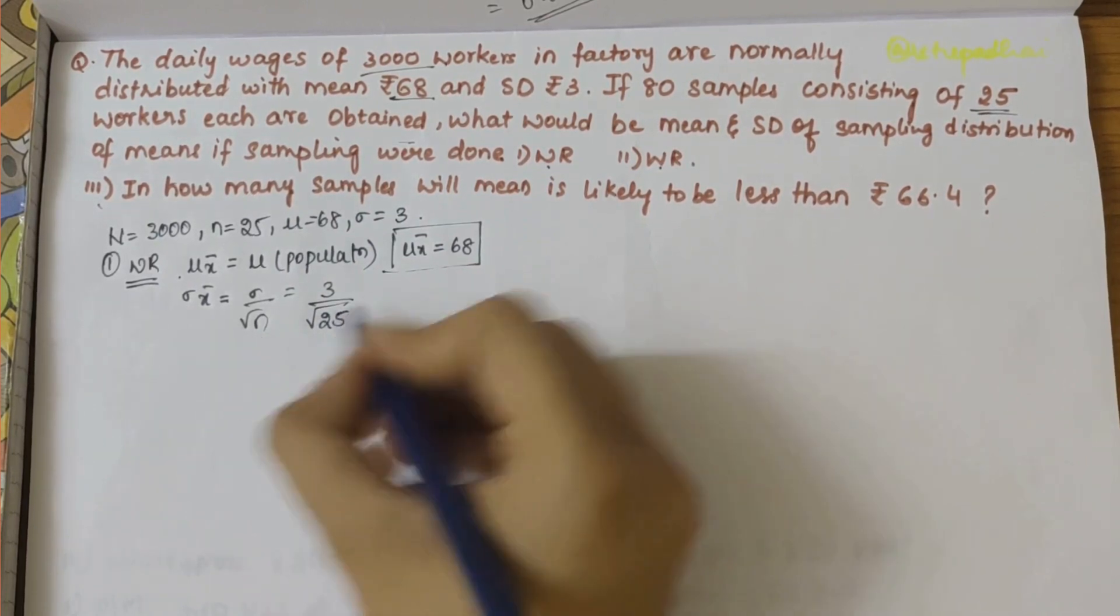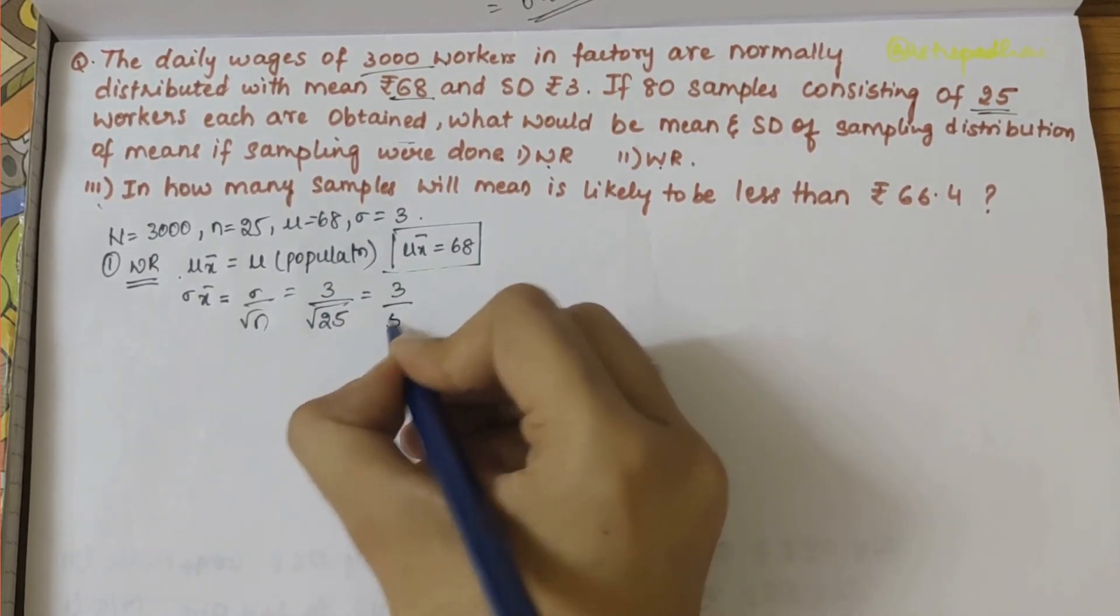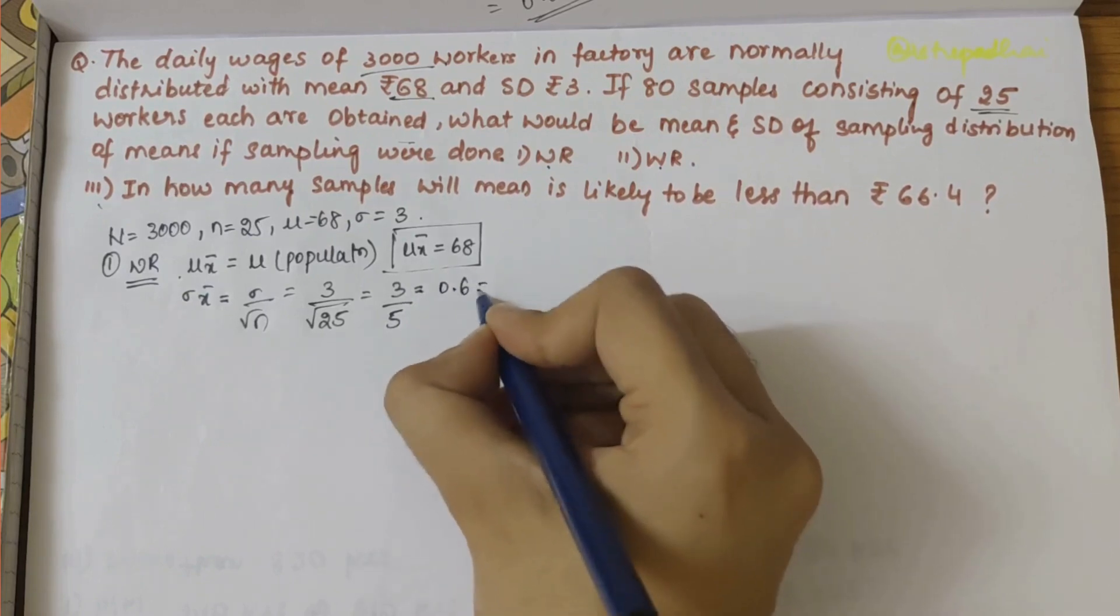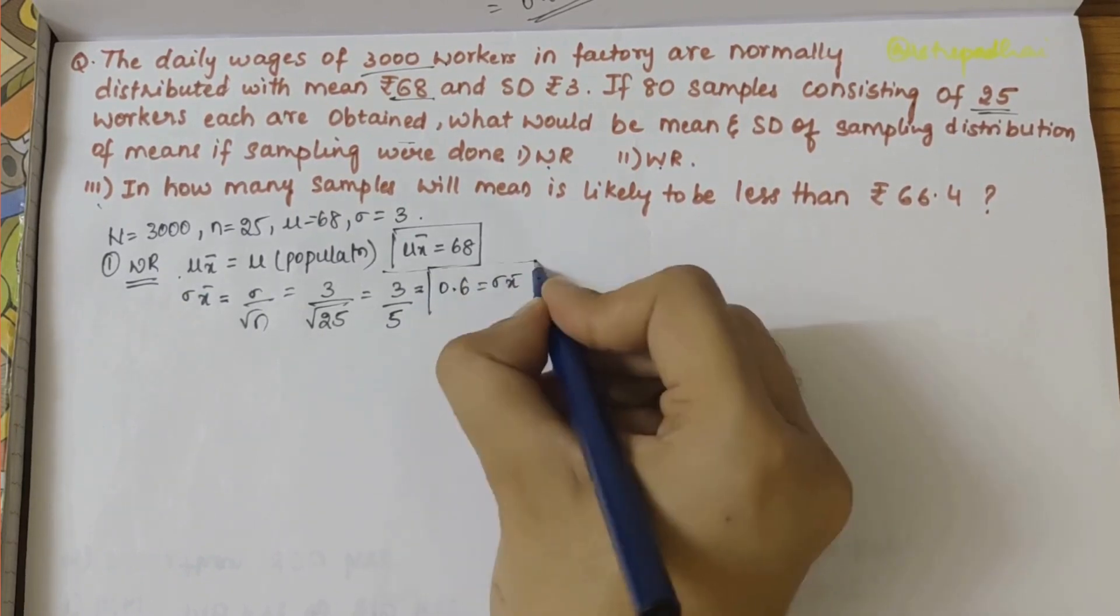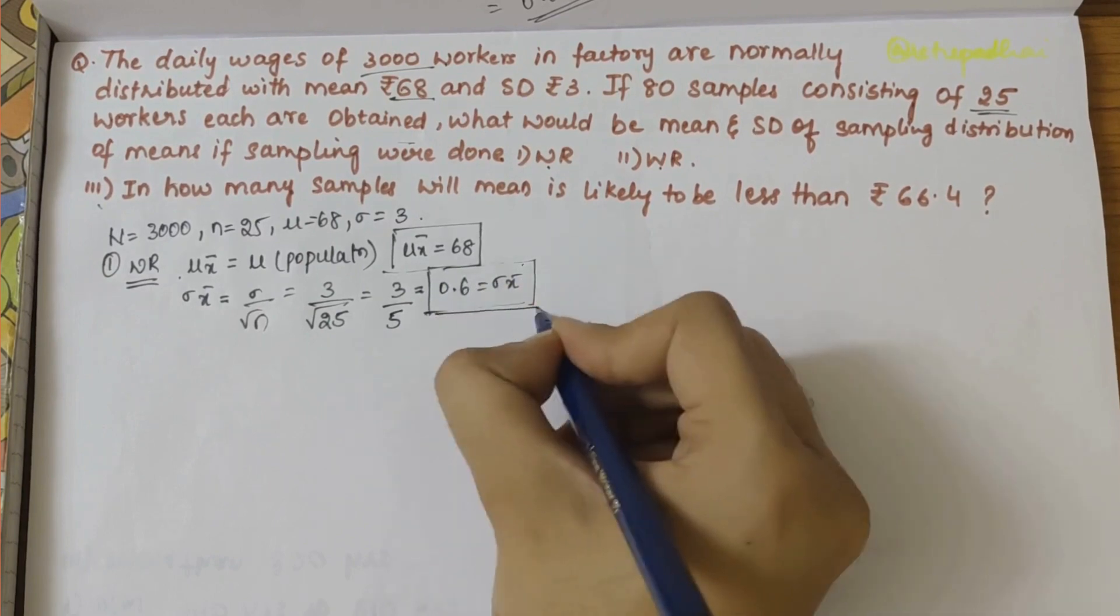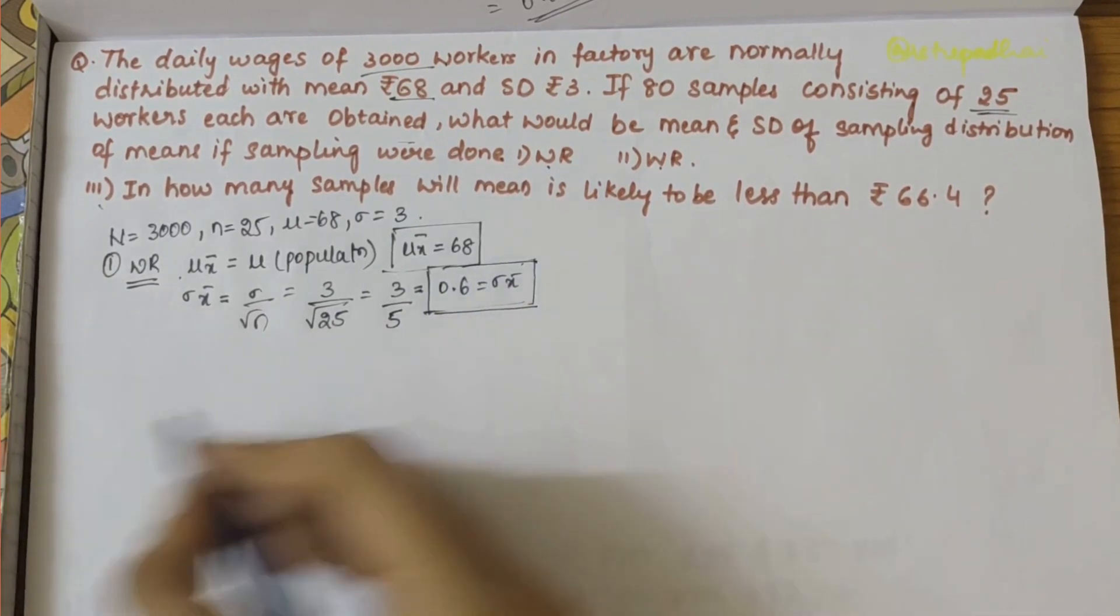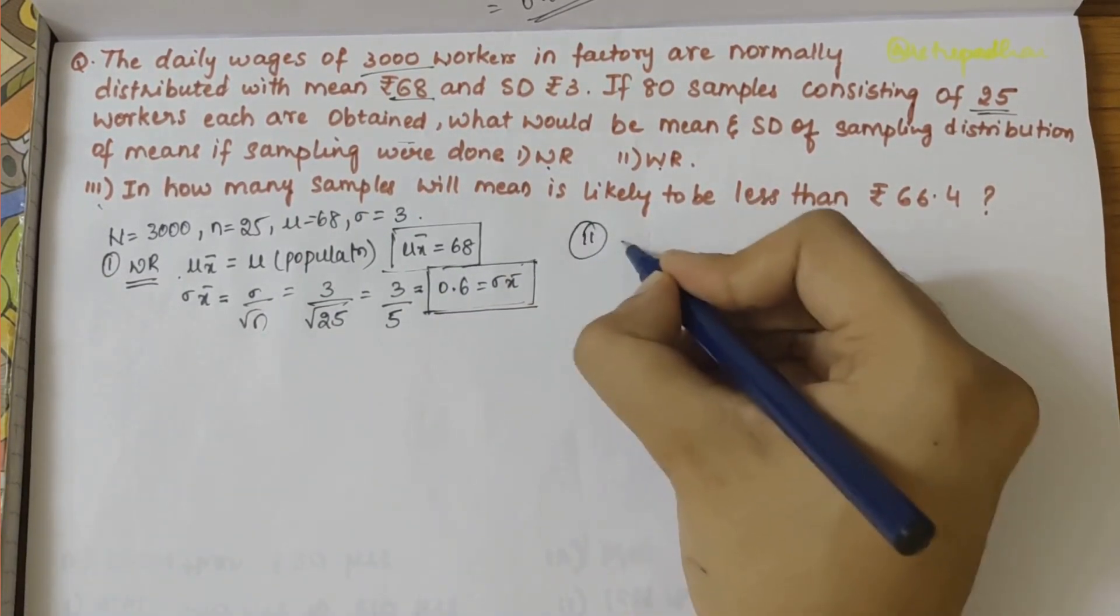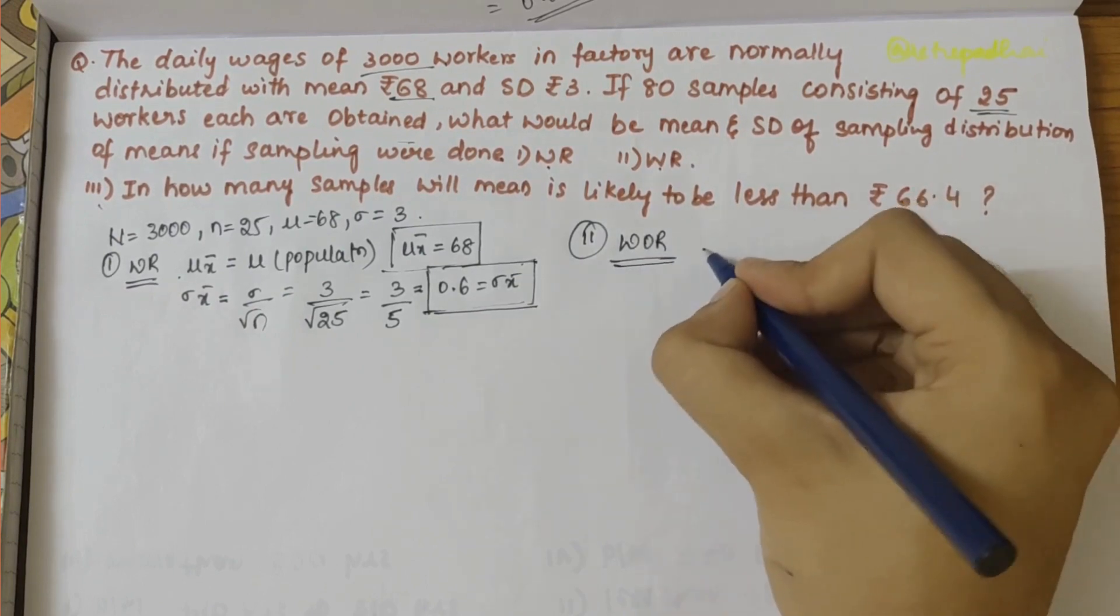Sigma value is 3 and n value is 25, so 3/5. If you solve this you get 0.6, that is σ x-bar. So we have found out mean and variance with replacement. Similarly, without replacement, let's write.